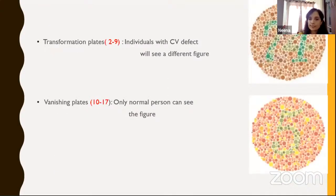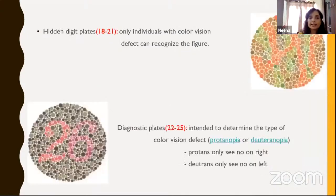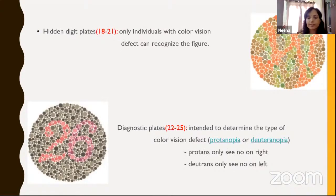Plates two to nine are transformation plates — individuals with color vision defects will see a different figure. Plates 10 to 17 are vanishing optotypes — only the normal person can see the figure, whereas a person with color vision defect may not. Plates 18 to 21 are hidden digit plates — only individuals with color vision defects can recognize the figure; those with normal color vision will not see it. Plates 22 to 25 are diagnostic plates intended to determine the type of color vision defect — for example, whether protanope or deuteranope. Protanopes will only see the number on one side.